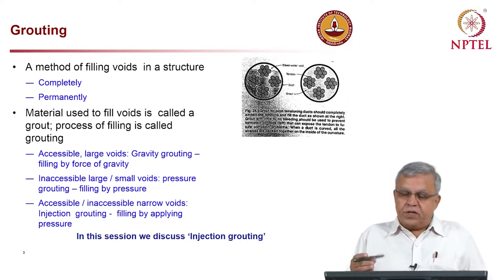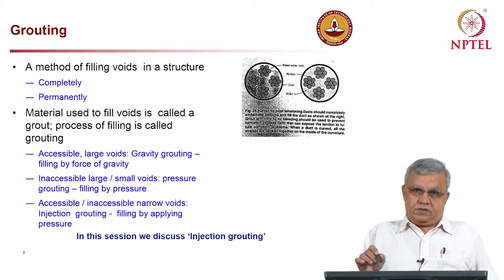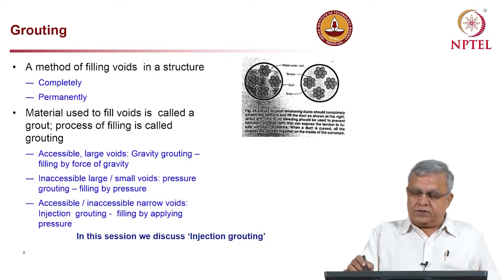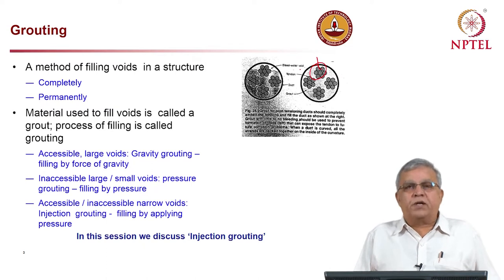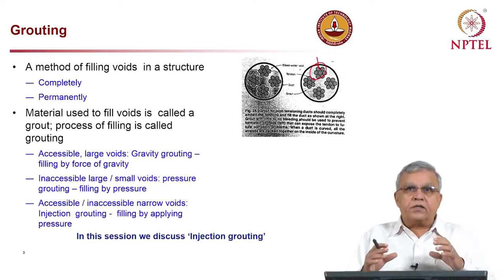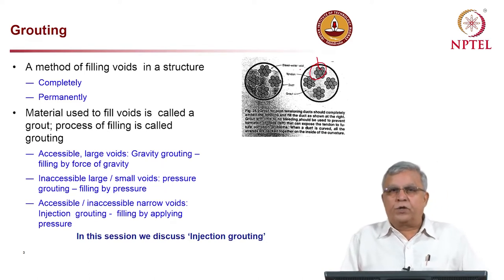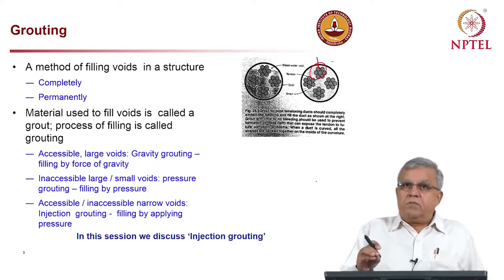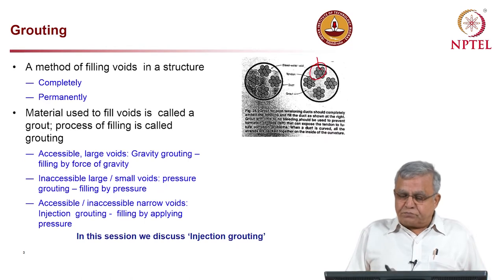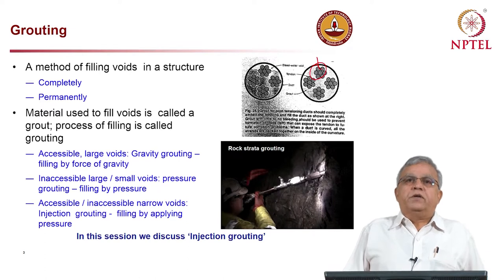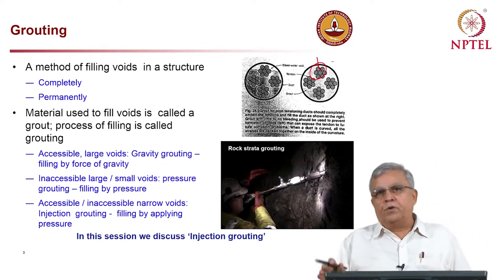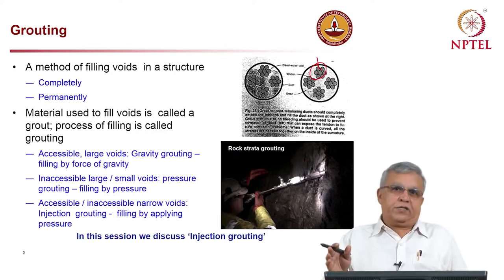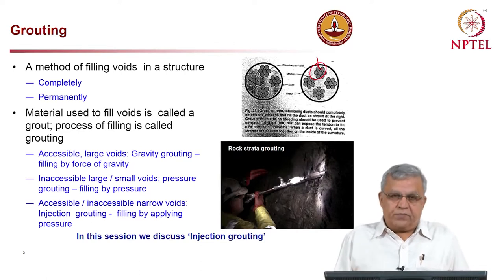A post-tension cable duct illustrates one grouting application. Cable strands inside the duct have spaces between them that must be grouted to protect the strands from corrosion - pressure grouting with cement is used here. Another example is rock strata grouting in tunneling, where water leaks through fine fissures in rock. A deep hole is drilled, a packer inserted, and the material is grouted to seal the fissures.